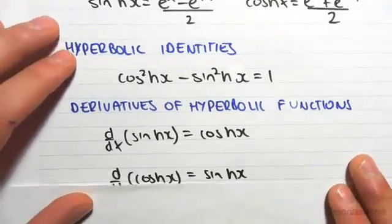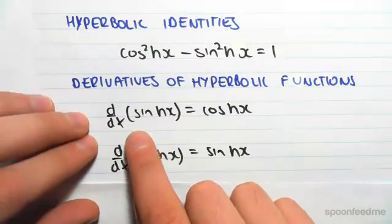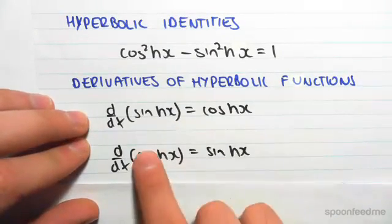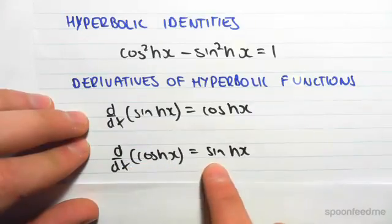Just to remind you of the derivatives of hyperbolic functions, the derivative of sinh x equals cosh x, the derivative of cosh x equals sinh x.